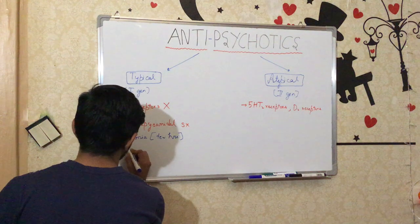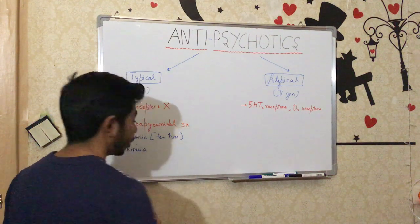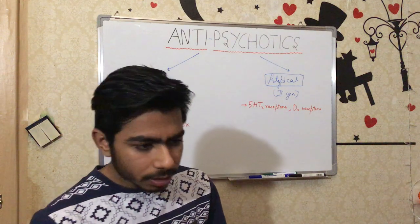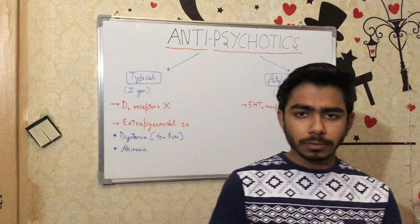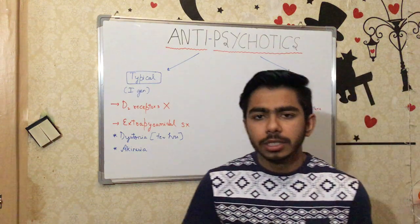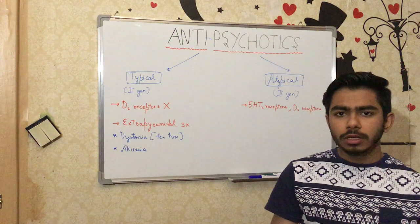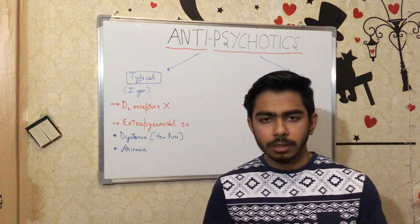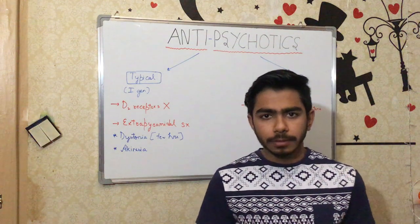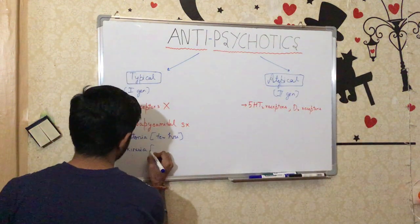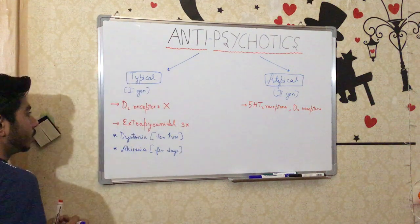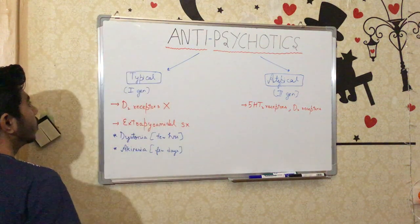There is also akinesia, which is something like a Parkinson-like syndrome — the person would not be able to initiate steps if thinking of going somewhere, and if he starts walking, he would not be able to stop suddenly. This is the Parkinson-like symptom; however, Parkinson's and psychosis are very different conditions. Akinesia symptoms can appear within a few days in patients on typical antipsychotics.